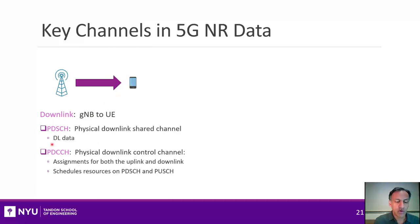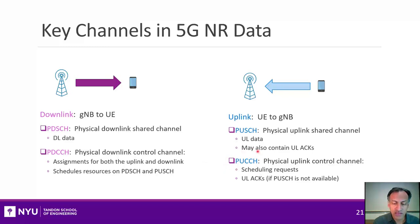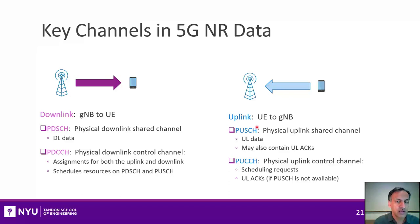The other key downlink channel is called the Physical Downlink Control Channel, or PDCCH, which has the assignments — telling the UE which time-frequency resources are being allocated to it. Similarly, in the uplink there are two key channels: the Physical Uplink Shared Channel (PUSCH), which carries uplink data the UE is sending, and the Physical Uplink Control Channel (PUCCH). The uplink assignments still go on the downlink because the gNB is the master that schedules everyone. The PUCCH is used to send scheduling requests and to send back acknowledgements.